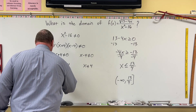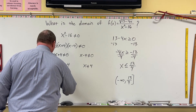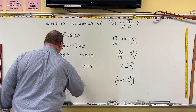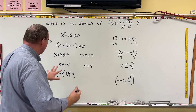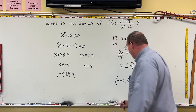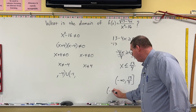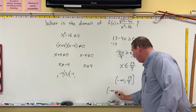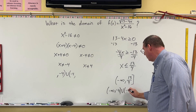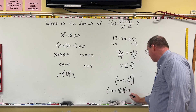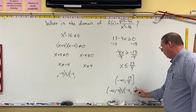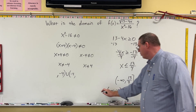To remove negative 4 from the interval, we write comma, negative 4, parenthesis, union, parenthesis, negative 4, comma, and load this into our interval. So the final domain is: negative infinity, comma, negative 4, parenthesis, union, parenthesis, negative 4, comma, 13/4, bracket. That's our domain.